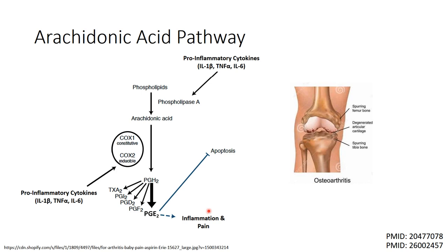In the case of osteoarthritis, cyclooxygenase 2 is expressed in the sublining layers, particularly in the vascular endothelial cells, infiltrated mononuclear inflammatory cells, synovial fibroblasts, and chondrocytes. The upregulation of cyclooxygenase 2 coincides with the production of prostaglandin E2, which is a major pro-inflammatory prostaglandin.